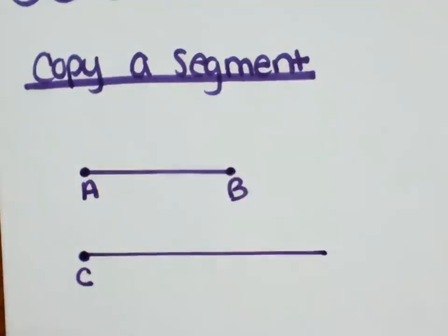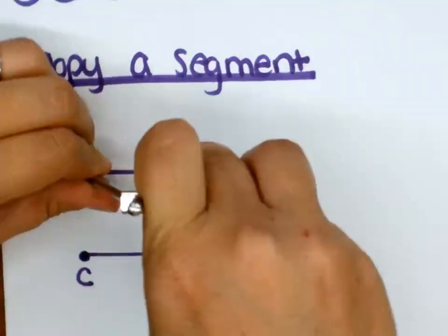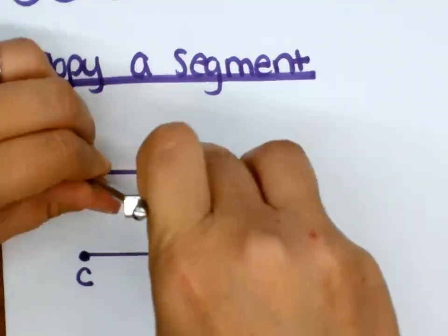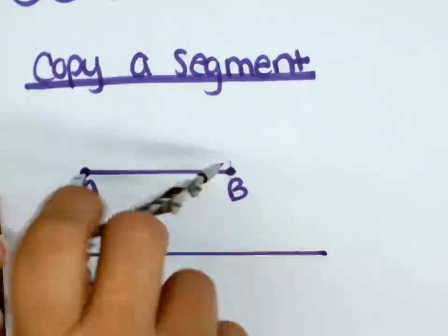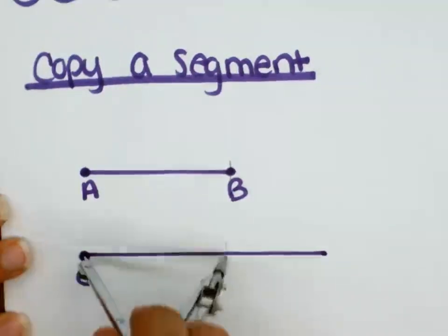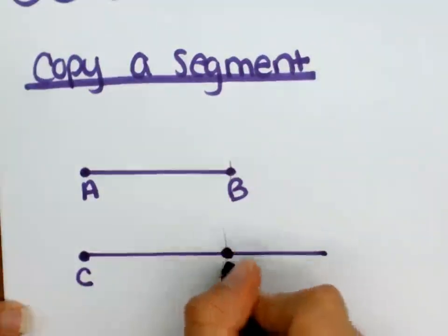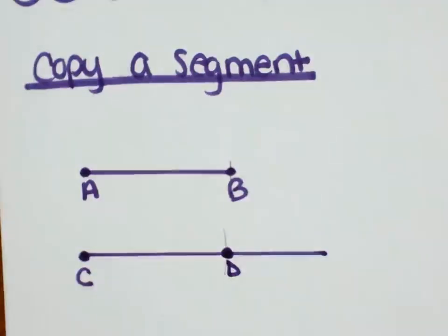Then I am going to put the sharp part on the A, bring my pencil out to the B to measure its length, right? And then I'm going to do the same thing. I'm going to put the sharp part on the C and I'm going to make a little arc. And now they're exactly the same length. Here's my D and now my segment is copied. They are both the same length. Pretty simple.